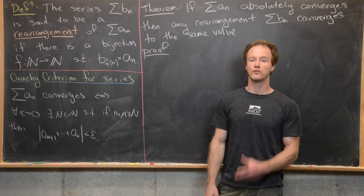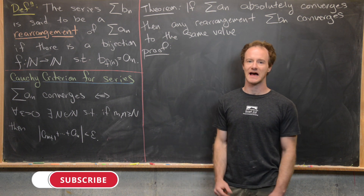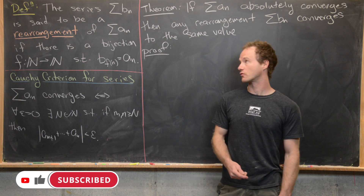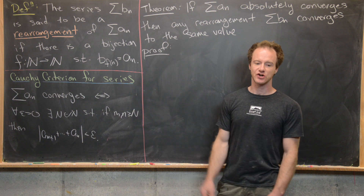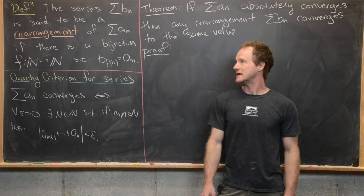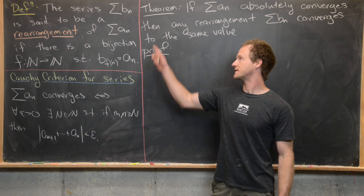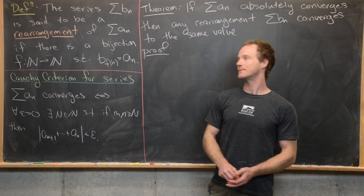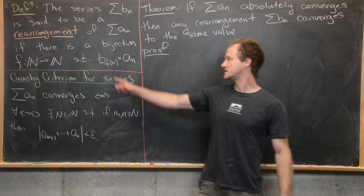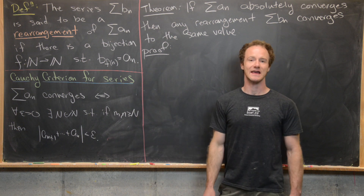In this video we're going to introduce rearrangements of series and prove a classic result involving absolutely convergent series and their rearrangements. So let's start with the definition. The series B_N is said to be a rearrangement of the series A_N if there is a bijection from the natural numbers to the natural numbers such that B sub F(N) equals A sub N.